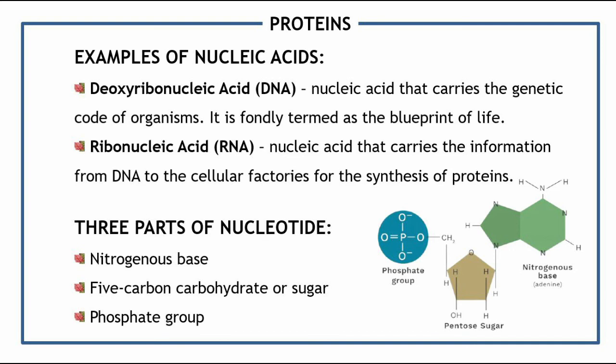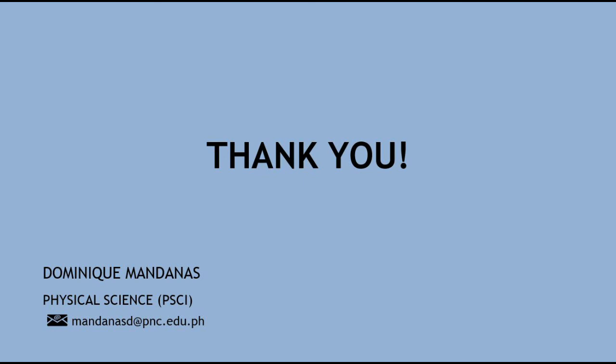Looking at the illustration, we can see the parts of a nucleotide: the phosphate group, the pentose sugar in the middle — pentose meaning 5-carbon carbohydrate — and the nitrogenous base, also known as adenine, shown in green. We can now distinguish the differences among the biological macromolecules, have characterized each one individually, and have discussed their functions and structures. That is it for our Module 7. See you on the next one!